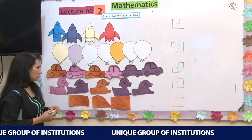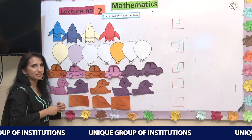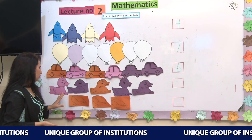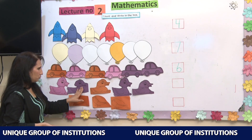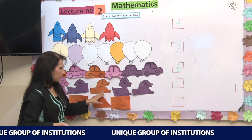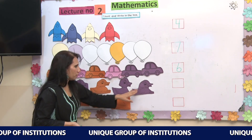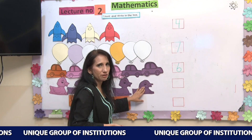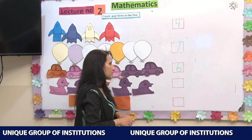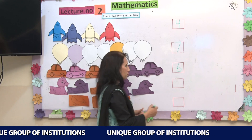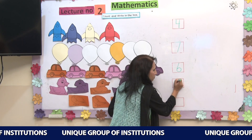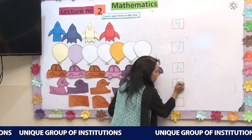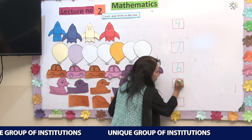Let's move forward and count these ducks. How many ducks are here? 1, 2, 3, 4, 5. There are 5 ducks, and in the box we will write number 5.